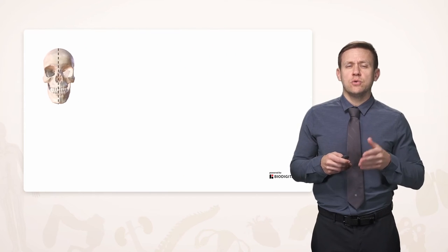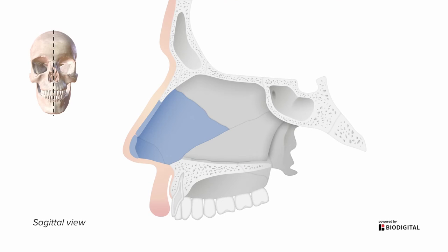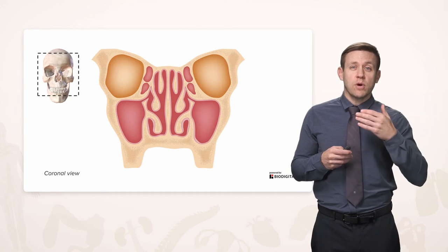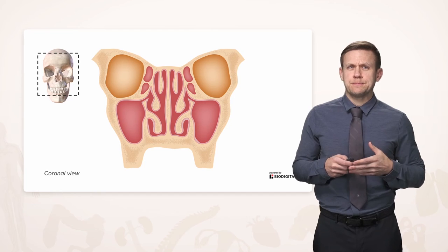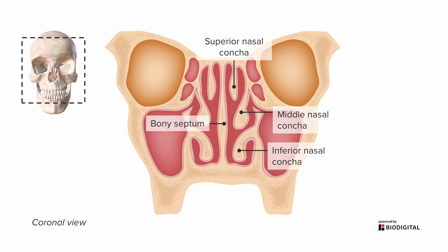Now let's look at a sagittal view right down the midline, looking towards the septum from the left side. Anteriorly, it's again made up of cartilage, which gives it the flexibility familiar with the external nose. But further back, it's made up of bone, so it's rigid. Now if we were to take a coronal section somewhere around this bony septum, we see there's actually a lot of space here. We again find the bony septum in the midline separating the cavity into left and right, and we again see these uniquely shaped bones coming off of the lateral wall — the concha or turbinates — named for their location: superior, middle, and inferior nasal concha on either side.